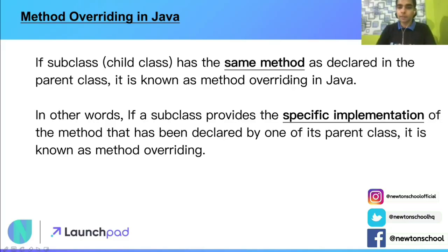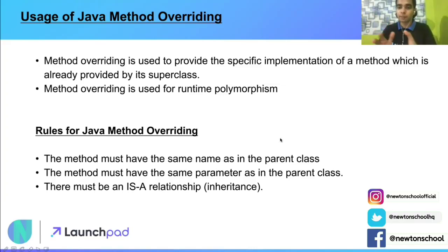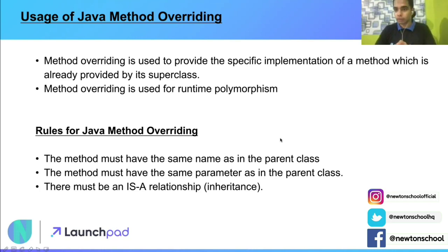In other words, if a subclass provides the specific implementation of the method that has been declared by one of its parent classes, it is known as method overriding. The usages are: number one, method overriding is used to provide the specific implementation of a method which is already provided by the superclass or parent class. Number two, method overriding is used for runtime polymorphism. We are going to see how that happens in a subsequent video.